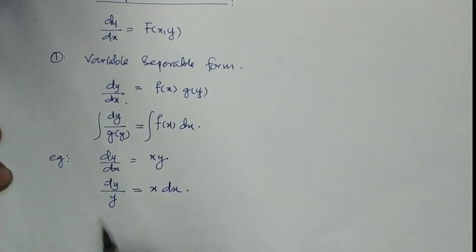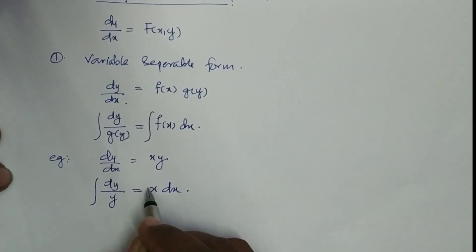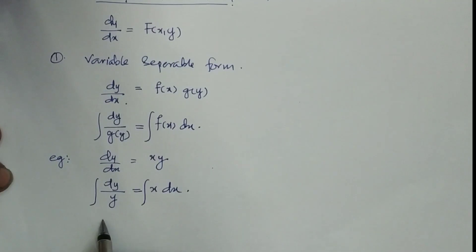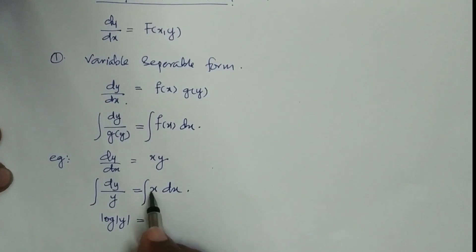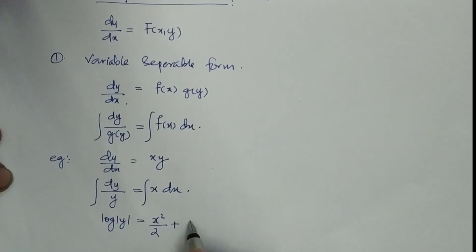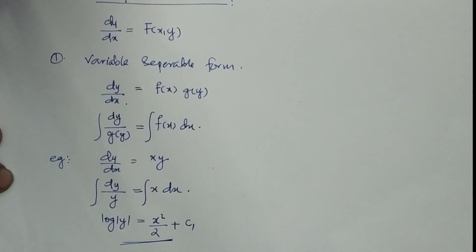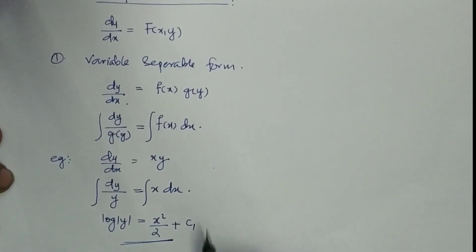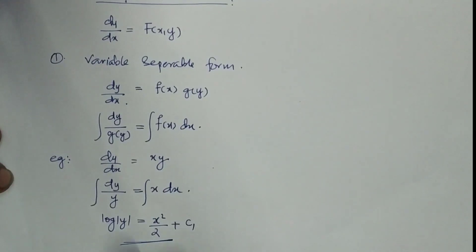We integrate both sides — with respect to y and with respect to x. Integrating 1/y with respect to y gives log y, and integrating x with respect to x gives x²/2. Adding the constant of integration c, the answer is: log y = x²/2 + c.